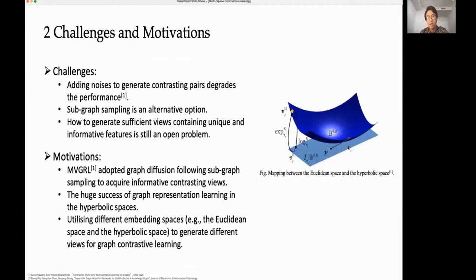However, existing approaches to generate contrasting pairs are quite limited. The majority of these methods use graph perturbations, including node dropping, edge perturbation, and attribute masking. As a result, these methods introduce noisy signals to produce corrupt views, which degrade model performance.